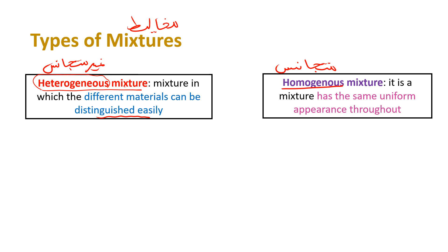What's the difference between heterogeneous and homogeneous mixtures? In heterogeneous, you can directly see what the different components are — you can distinguish them easily. Homogeneous mixtures have a uniform appearance throughout — it's difficult to distinguish between the components just by looking.